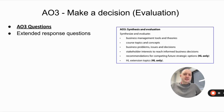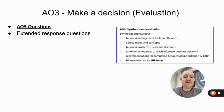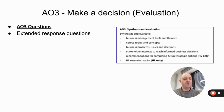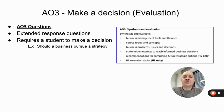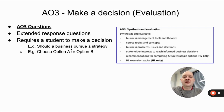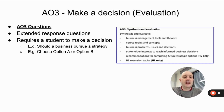AO3 questions are also called extended response questions — in other words, essays. These are generally the part of the exam that students like doing the least because a lot of people don't like writing essays, but we'll go through it. The key thing is it requires students to make a decision, such as should a business pursue a strategy — should they extend the product lifecycle, should they go public — or should they choose option A or option B.